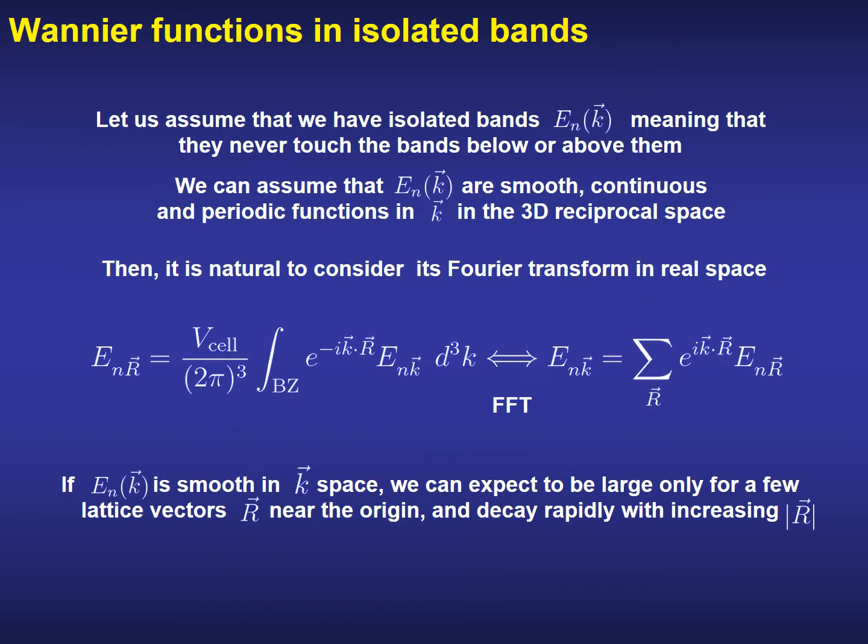We can assume that the bands are smooth, continuous, and periodic functions in the first Brillouin zone of the three-dimensional reciprocal space. Then it is natural to consider the Fourier transform between reciprocal and real space, defined using some conventions for normalization factors by the first equation at the left, where capital R is a vector of the Bravais lattice in real space. The inverse transform from real space back to reciprocal space is defined by the equation at the right. If the band structure is smooth in reciprocal space, then we can expect that the corresponding Fourier components will be large only a few lattice vectors away from the origin, decaying very rapidly with increasing distance.